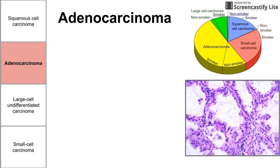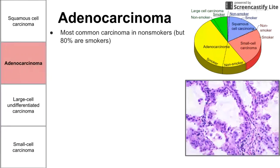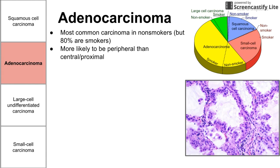Next, we have adenocarcinoma. Adenocarcinoma is the most common of the non-small cell carcinomas and the most common lung cancer in general. It is the most common carcinoma in non-smokers, but still the majority of people that have adenocarcinoma are smokers. It would be very rare to diagnose someone not exposed to smoke with squamous cell carcinoma — they might be more likely to have adenocarcinoma. Unlike squamous cell, adenocarcinoma is more likely to be peripheral than central.